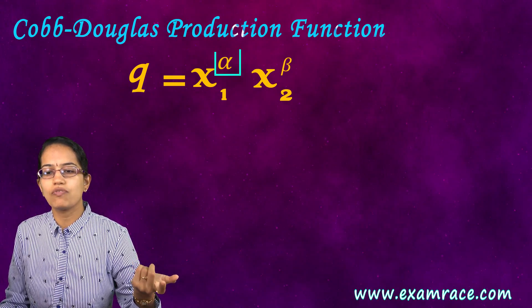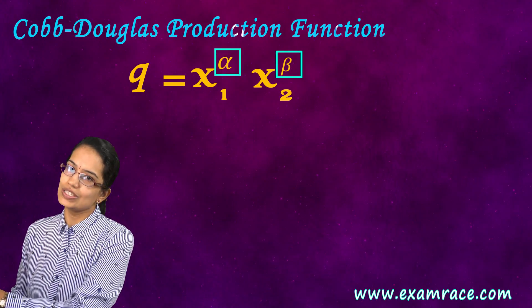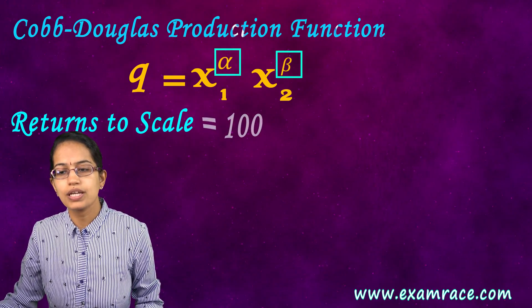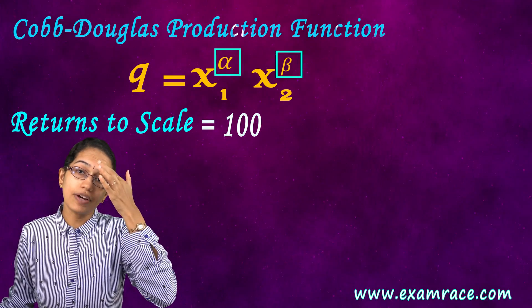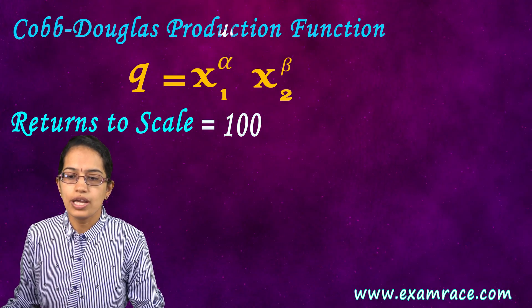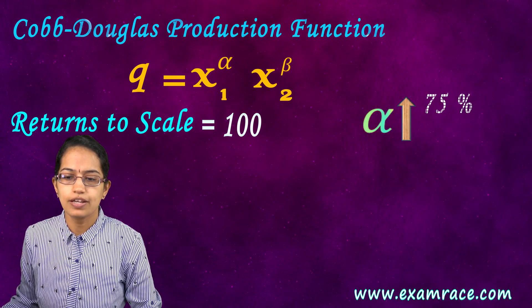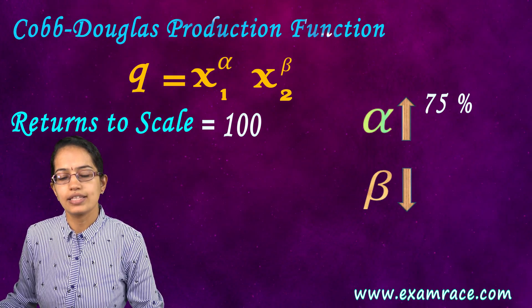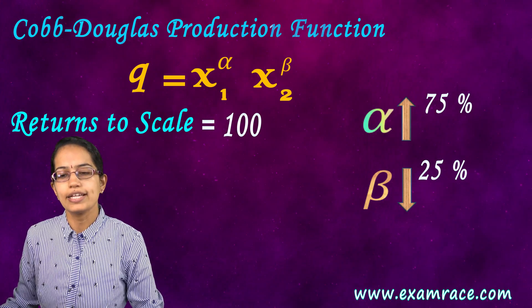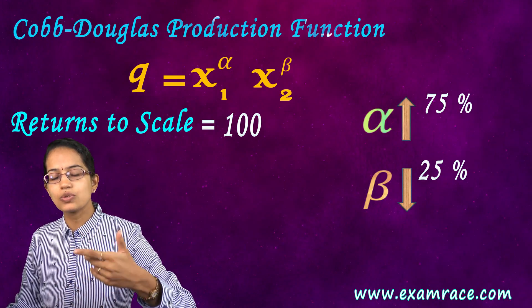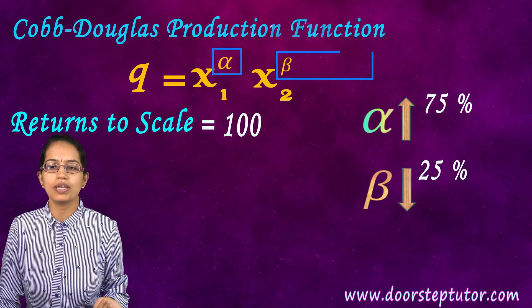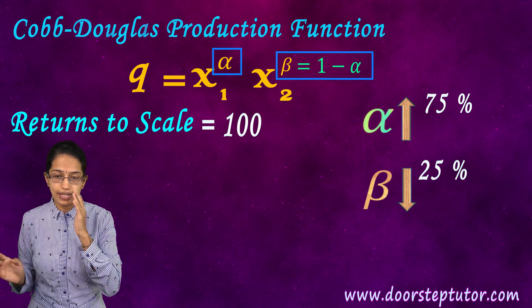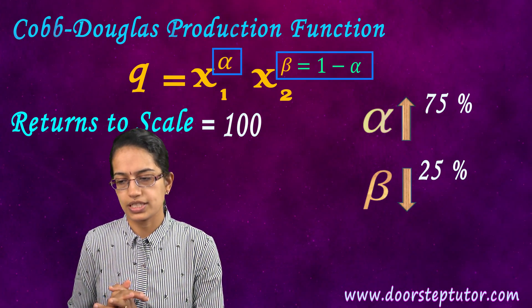Now this proportion of alpha and beta has to remain constant in order to have a constant return to scale. So let's say my return to scale is 100 — the constant return output I finally want is 100. Now if alpha increases by 75%, beta would be declining at 25%. So I need to create a balance. I can say if this is alpha, this would be 1-alpha, and we can create a balance between the two factors of production.